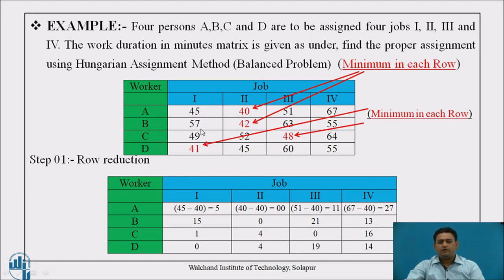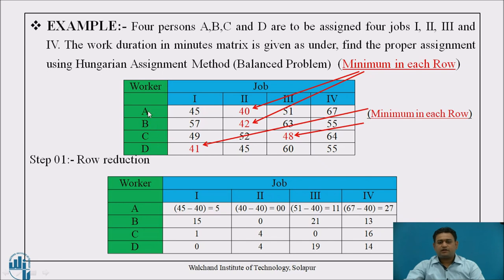For worker B, out of 57, 42, 63, 55, the smallest is 42, as highlighted by the red arrows. Row reduction means subtracting the minimum from each element in that row. For row A: 45−40=5, 40−40=0, 51−40=11, 67−40=27. For row B: 57−42, 42−42, 63−42, 55−42 — and the same process is carried out for each row.